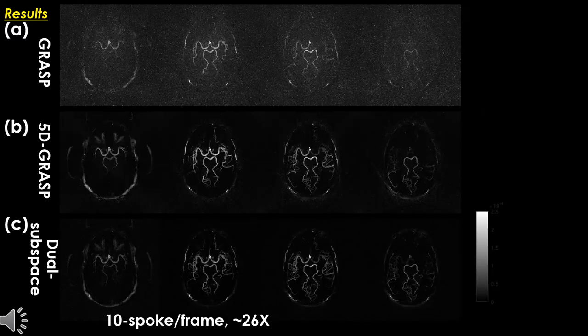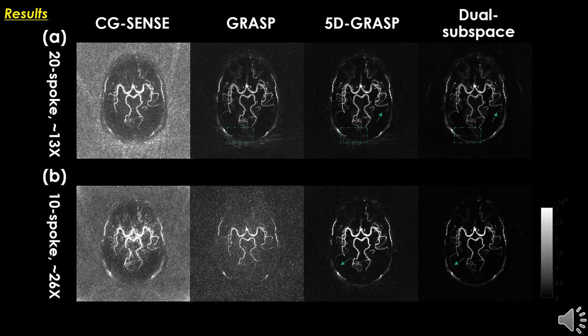Here are the 26-fold acceleration results corresponding to 10-spokes-per-frame. We can see that the proposed dual subspace MRI generates the best image quality among all the tested approaches. Here are the comparisons of single frame results — it can be obviously seen that the proposed dual subspace MRI has the best image quality among all tested approaches.